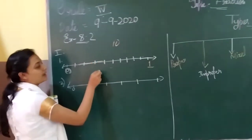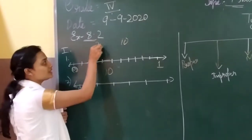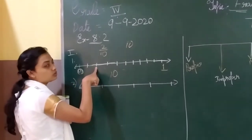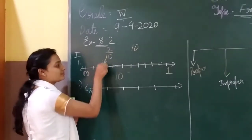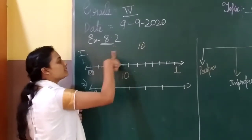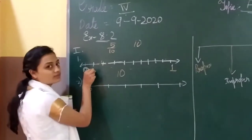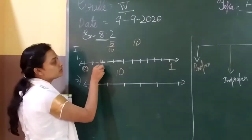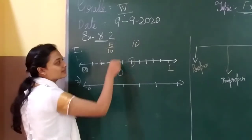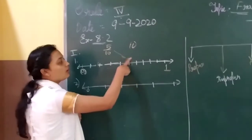10 parts. Now if I want to take any fraction — for example, if I want to take 2 by 10, I should count after 0: 1, 2. So this will be my 2 by 10, here. If you want to find 5 by 10, after 0: 1, 2, 3, 4, 5. So my 5 by 10 is here. This is how I represent a fraction on a number line.